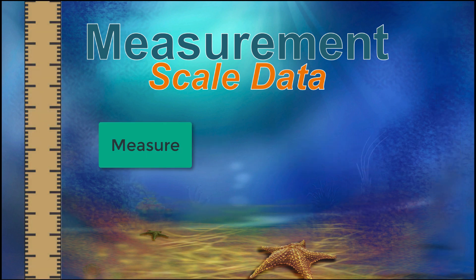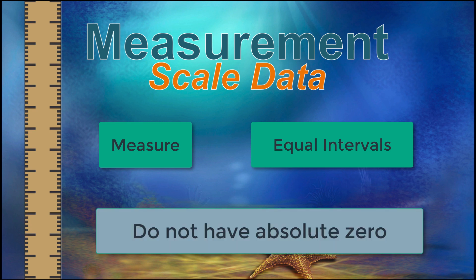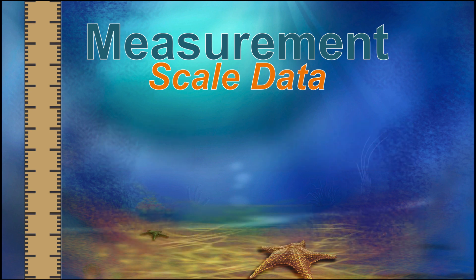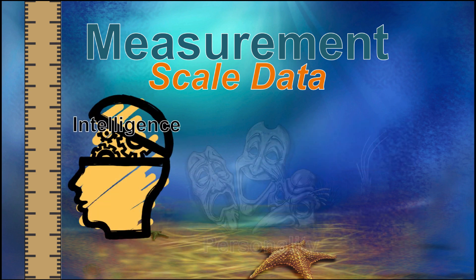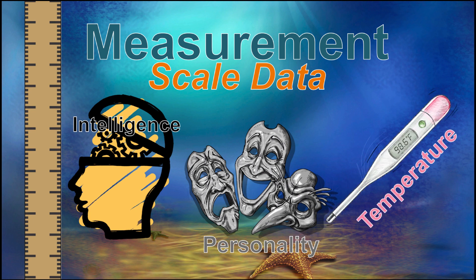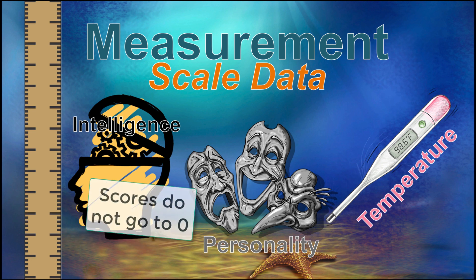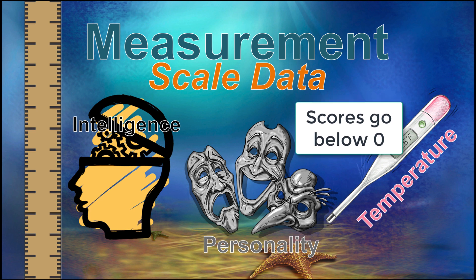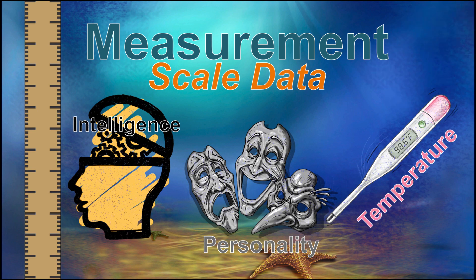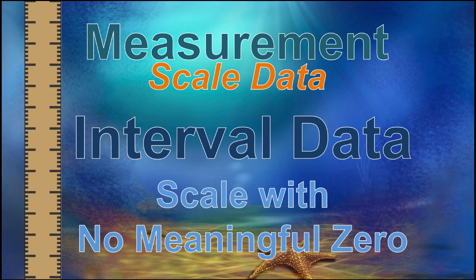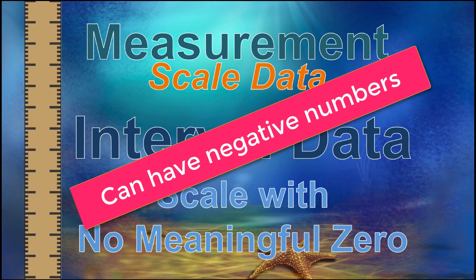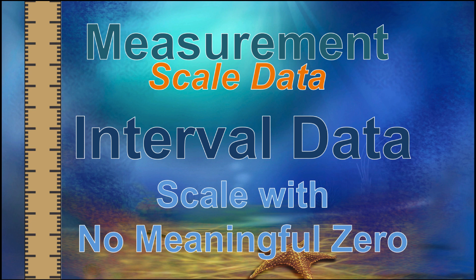Other scales measure something and have equal intervals on the scale, but do not have a meaningful zero. So if we measure your IQ score, or a test of your personality, or we measure temperature on a scale like Fahrenheit or Celsius — each of these have equal interval scales, but none of them have a meaningful zero point. Either you cannot actually score a zero, such as with an IQ test, or you could score less than zero, such as 20 degrees below zero Fahrenheit. These are called interval data, because they have equal intervals on the scale but do not have an absolute zero. If your scale can have negative numbers, then it is an interval, not a ratio level scale.